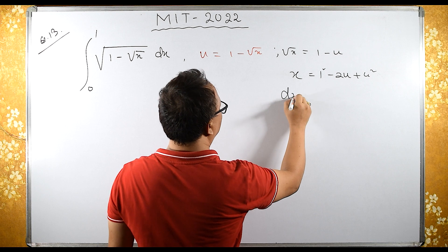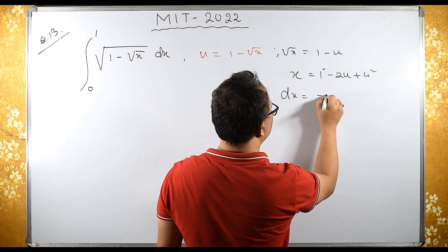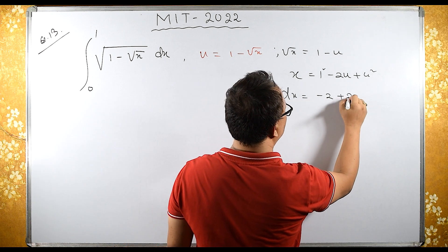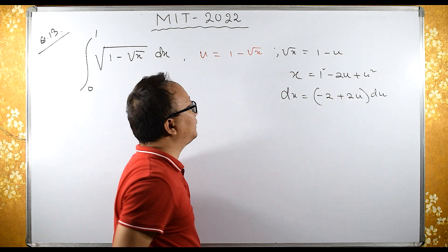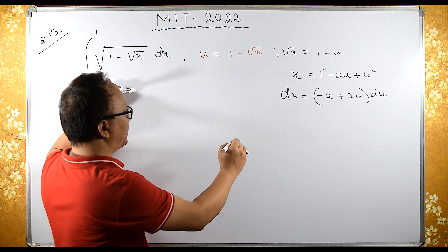Let's differentiate this. dx equals minus 2 plus 2u into du, or (-2 + 2u) du.